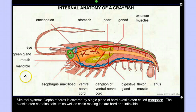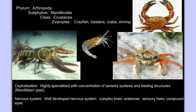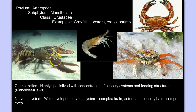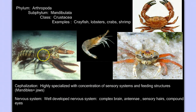Like all arthropods, the crustacea have a hard exoskeleton made of chitin. And if you've ever eaten crab legs or peeled shrimp, you've dealt with that exoskeleton. In many of the crustacea, that chitin is also reinforced with calcium to make it a really hard, thick exoskeleton, which helps for protection and also for carrying the pressure of the water pushing down on them.